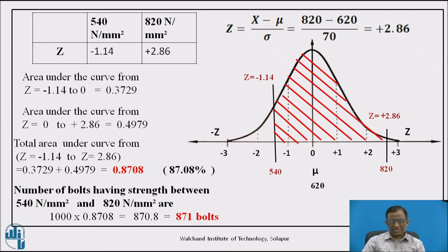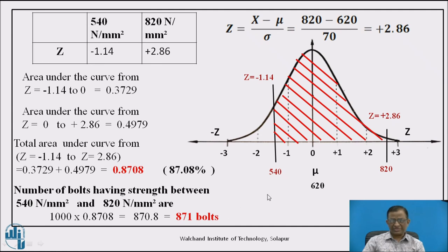In conclusion, out of 1000 bolts, approximately 871 bolts have strength between 540 and 820 N/mm². By using the statistical method of converting the normal curve into a standard normal curve with deviate Z and obtaining areas from the standard table, we can analyze how many bolts fall within any given strength range. This completes the problem.